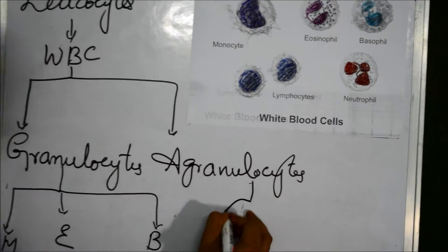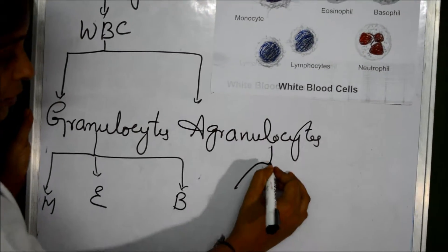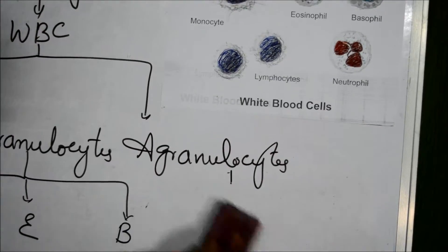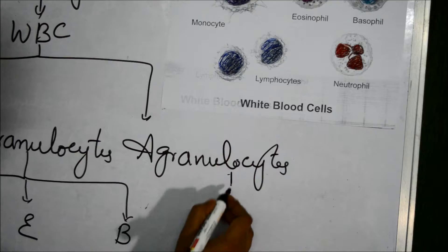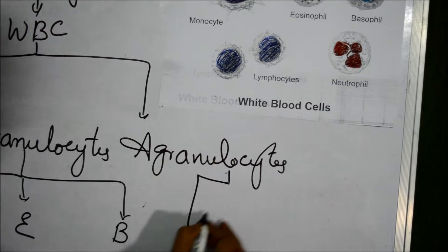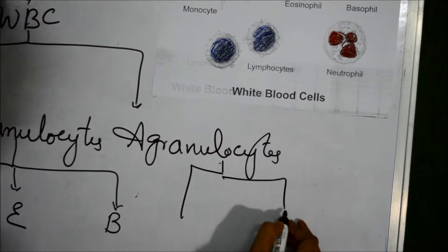Agranulocytes are divided into two types: lymphocytes and neutrophils.